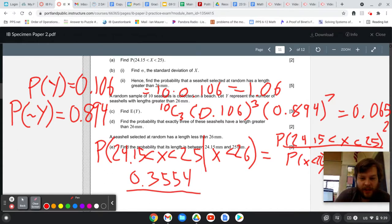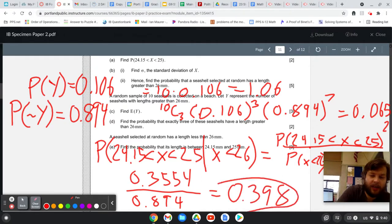That's what we found with the P of not Y. So divided by 0.894. And that's just division. 0.3554 divided by 0.894. And we get 0.398. There you go.